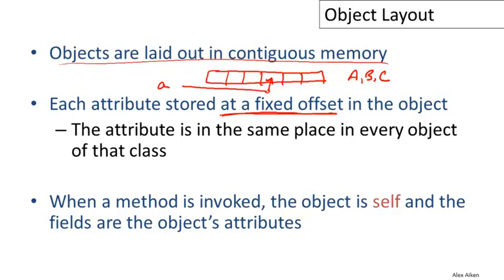Another key aspect of code generation for objects: when a method is invoked, the object itself is the self parameter. Self refers to the entire object — you think of self as being a pointer to the entire object. Remember that self is like the 'this' variable or 'this' name in Java. The fields — the attributes of the object — refer to particular positions within the object.